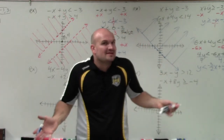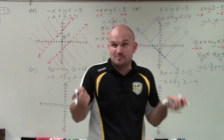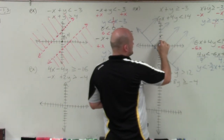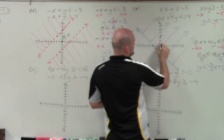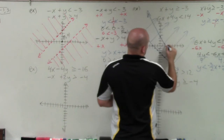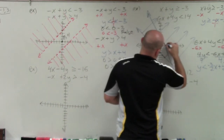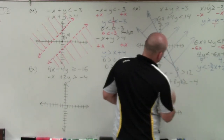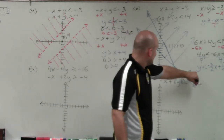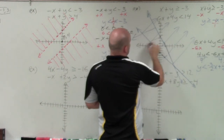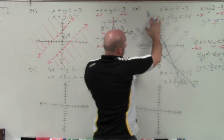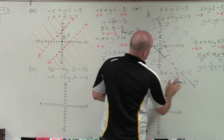For the next equation, the y-intercept is 7 halves, or 3.5, which is between 3 and 4. The slope is negative 3 halves, so I go down 3 to the right 2. This is a less than symbol — not less than or equal to — so it's a dashed line, and I shade all values below it. The two solution sets intersect between these two lines, forming the feasible region.